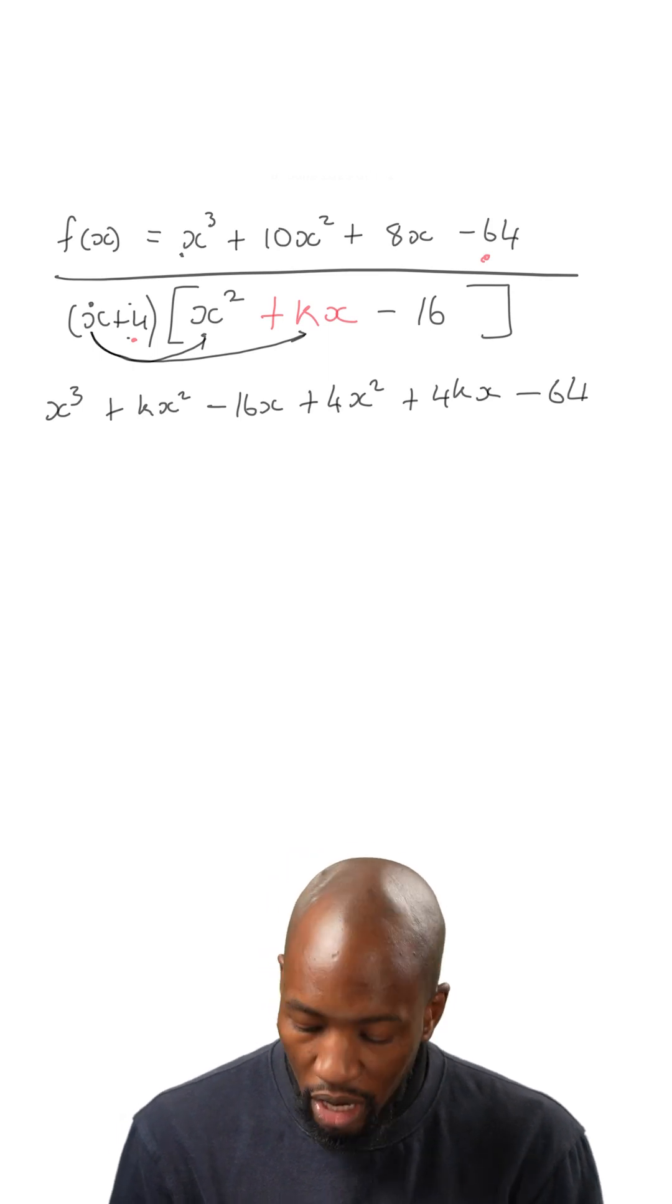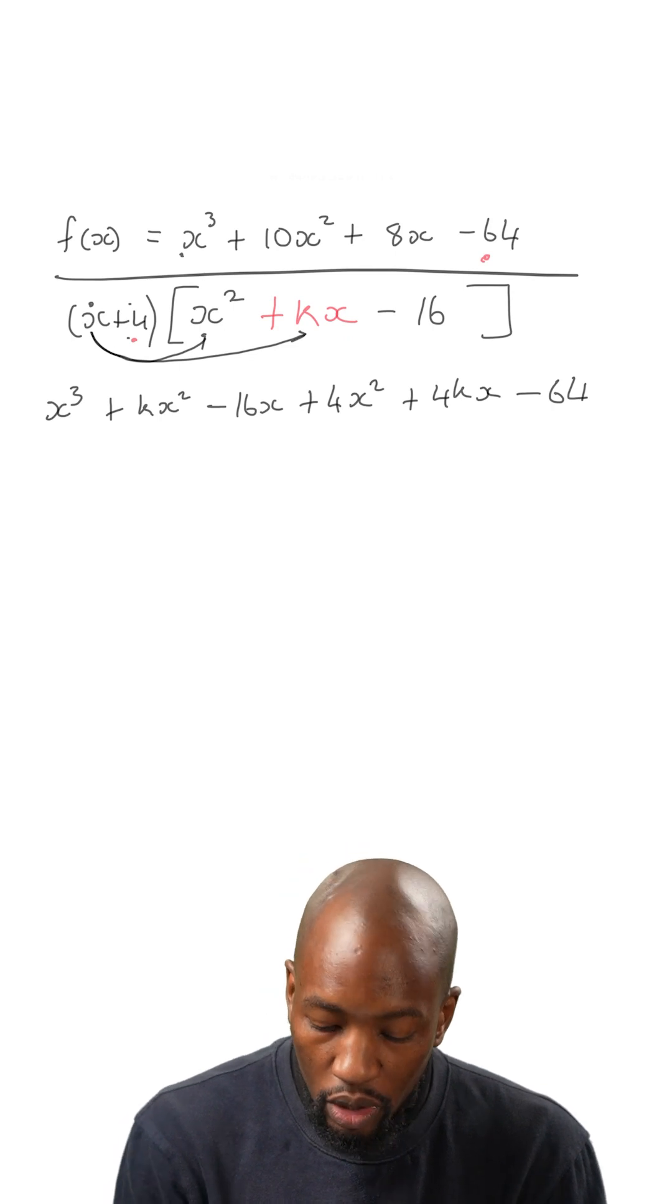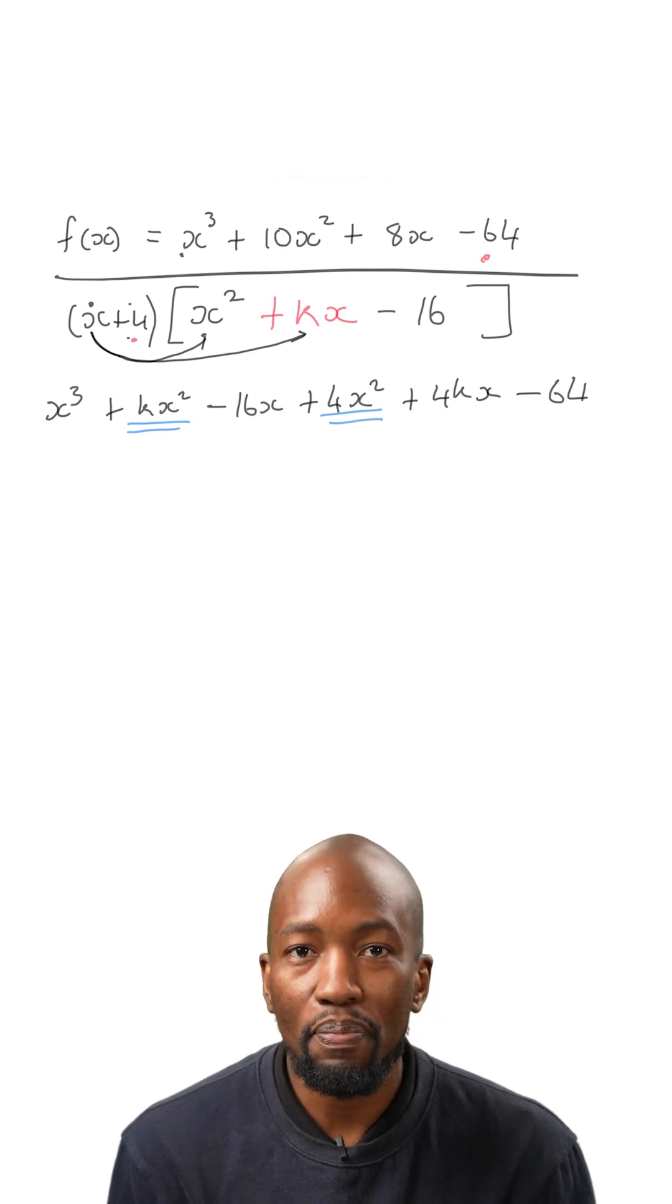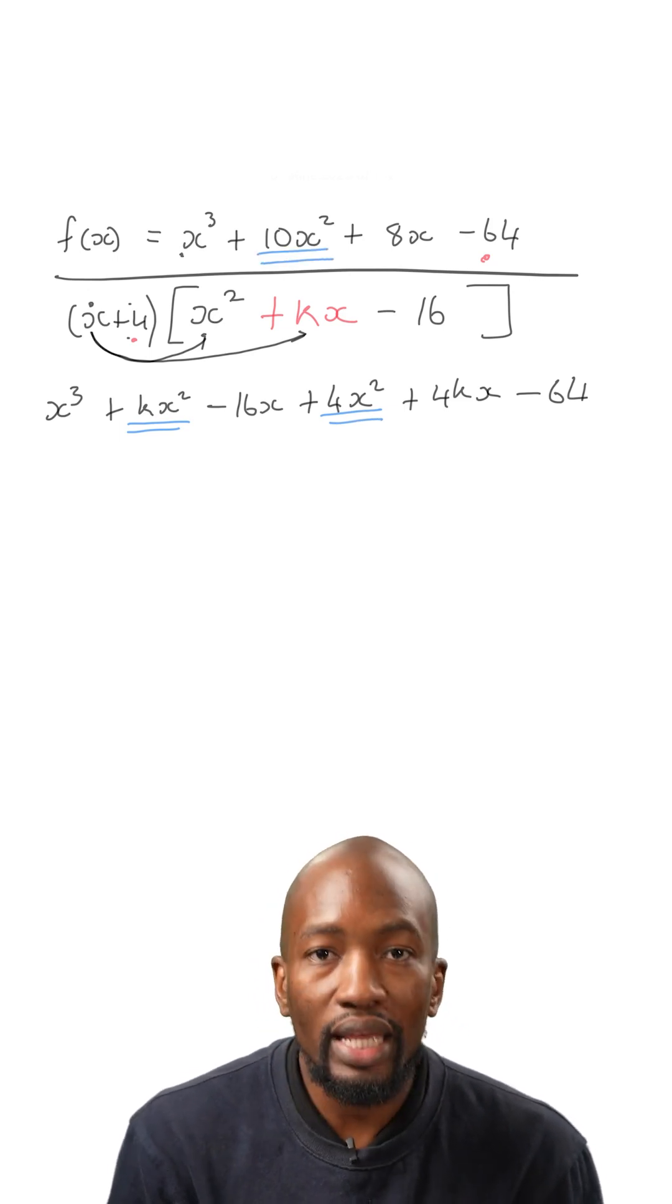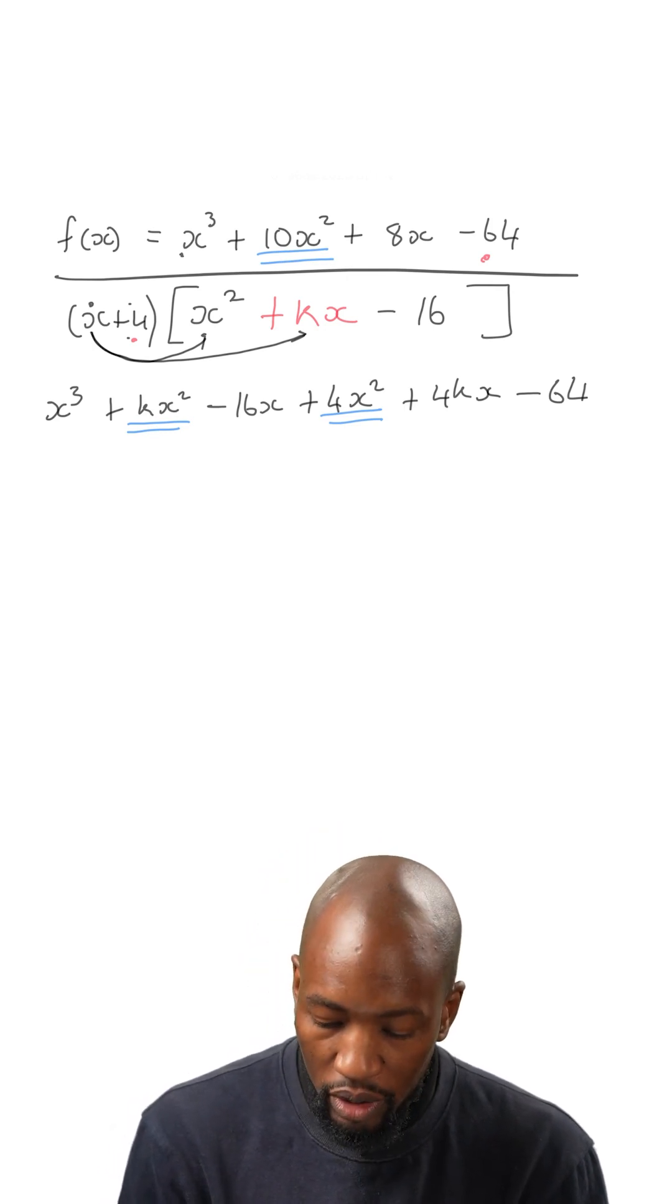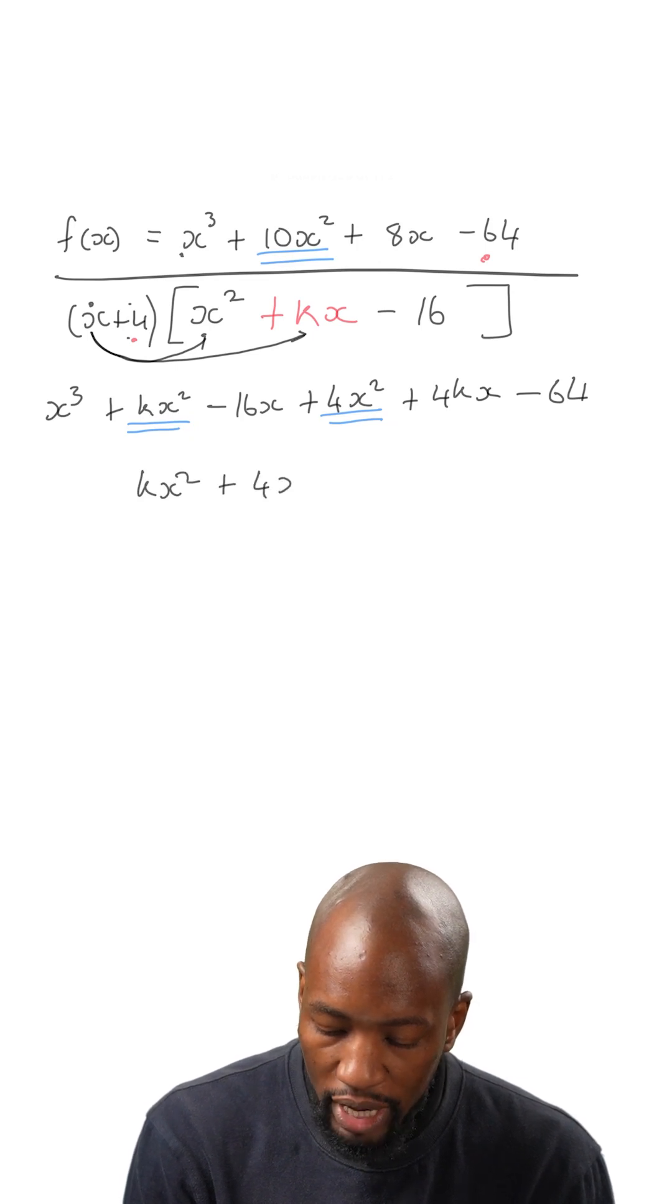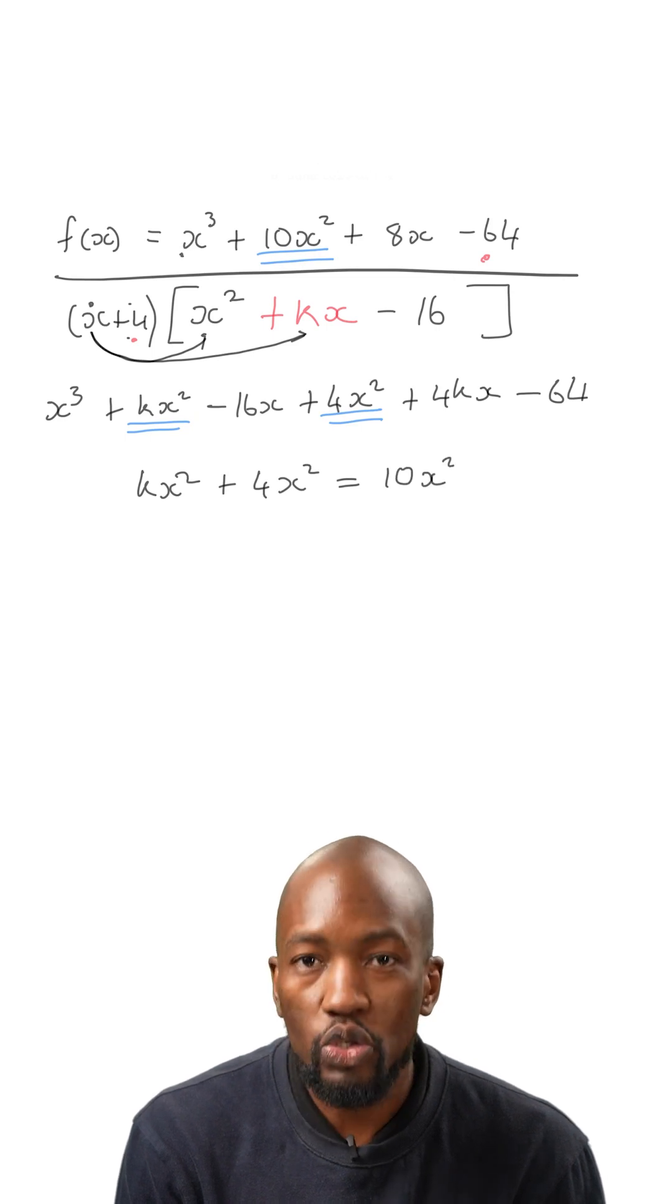Now what we care about are the coefficients of x squared. So meaning that we're looking at kx squared and 4x squared. These must be equal to the 10x squared in the original equation. Notice what I'm going to do. I'm simply going to say, kx squared plus 4x squared is equal to 10x squared.